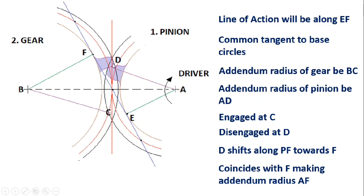Since the involute can exist only outside the base circle, it is not possible for the addendum to move inside the base circle of any gear. Therefore, any tooth profile inside the base circle will be non-involute, and becoming non-involute causes interference. To avoid interference, the maximum addendum radius of the pinion should be AF. Similarly, at the engagement side, if the addendum circle of the gear is increased, point C tends to coincide with point E, and further increase makes it go inside the base circle. Hence, the maximum addendum radius of the gear permissible will be BE.